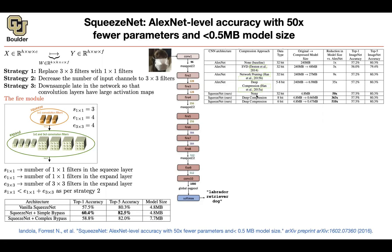The take-home message is that deep compression and SqueezeNet's fire module are two orthogonal approaches — not redundant — because they are totally different methods. You can start with a network that is already squeezed and then compress it even further. We are going to introduce some meta parameters to control the size of the model for different target devices.